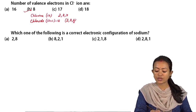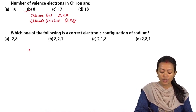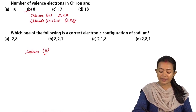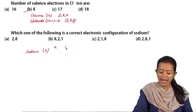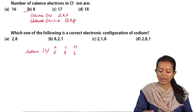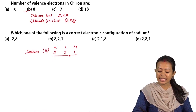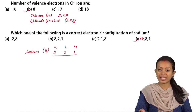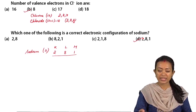Which one of the following is the correct electronic configuration of sodium? The atomic number of sodium is 11. So we have K, L, and M shells where we arrange 2, 8, and 1. The electronic configuration of sodium is 2, 8, 1 — and thus the correct answer is option D, because the atomic number is 11, giving 2, 8, and 1.